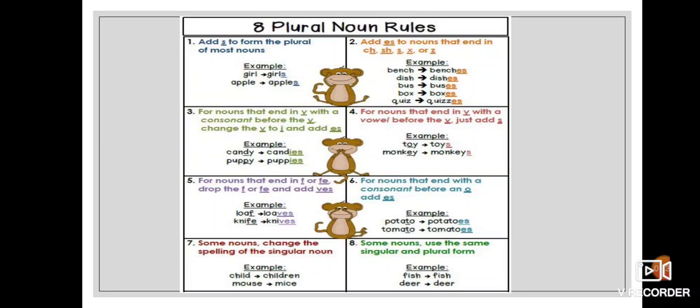First is adding s to form the plural of most nouns. Girl will become girls, apple, apples. Second is adding es to nouns that end in ch, sh, s, x, or z.